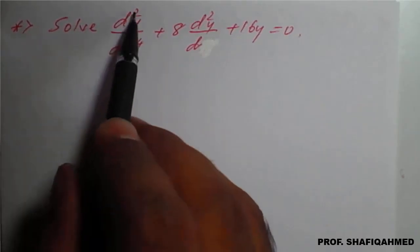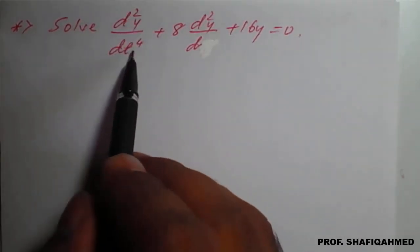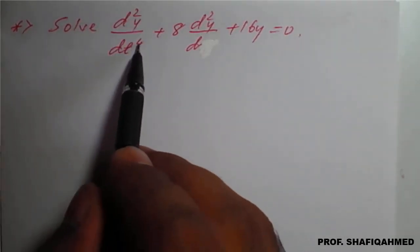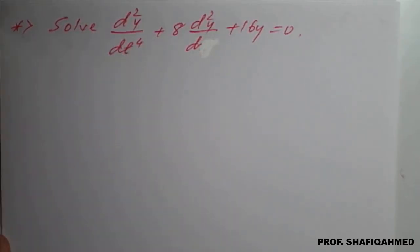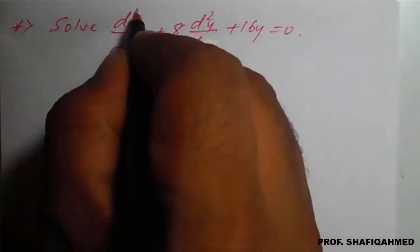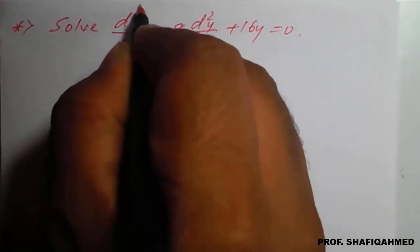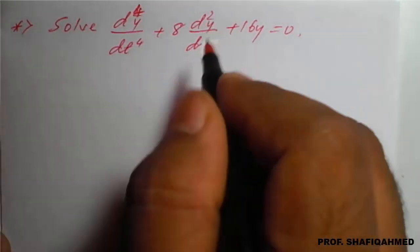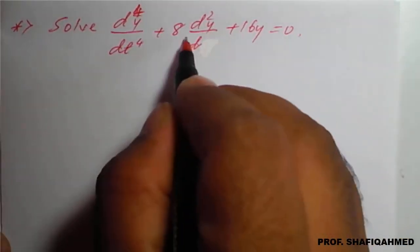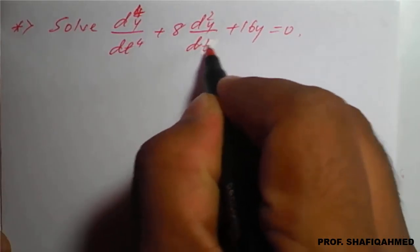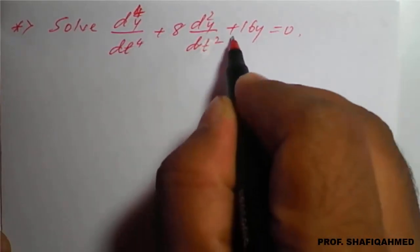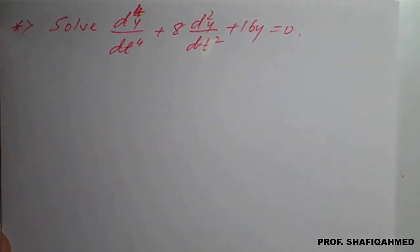The problem is to solve d⁴y/dt⁴ plus 8 times d²y/dt² plus 16y equal to 0.